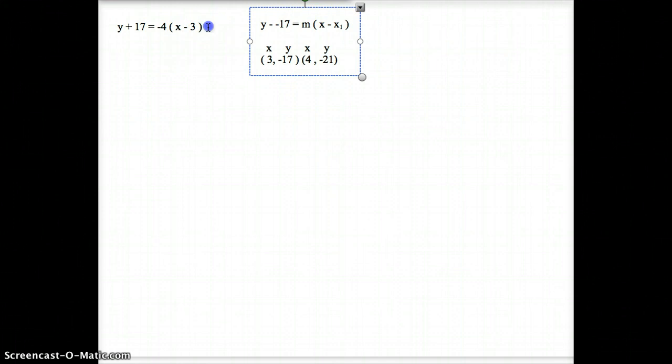So now what's the first step we do in this one here? First step I need to do here is I need to distribute this negative 4 right here with the x and the negative 3. So what does that look like? y plus 17 equals negative 4x when I multiply the negative 4 by the x, and then a negative 4 times a negative 3 would be a positive 12. So hopefully that makes sense what the first step is right here, distributing this part right here.